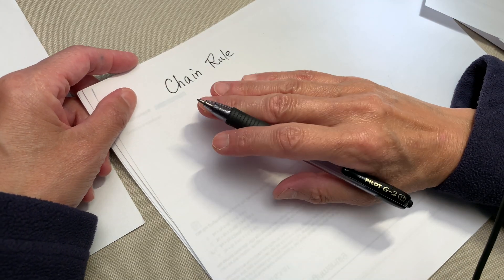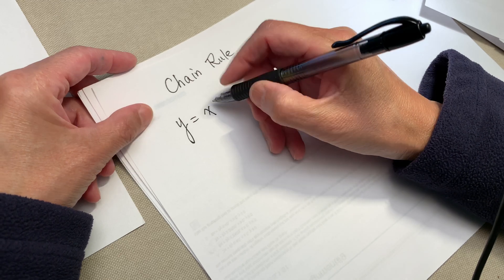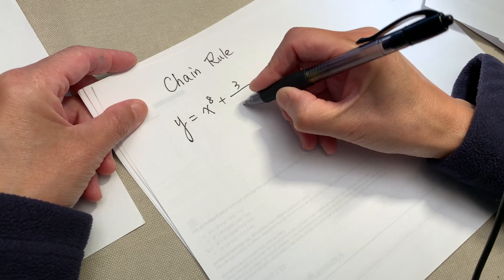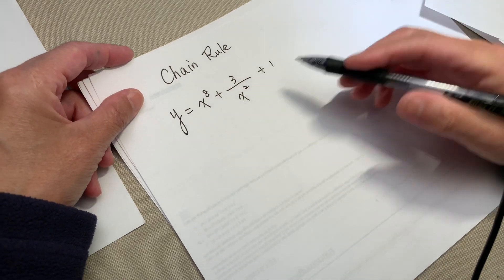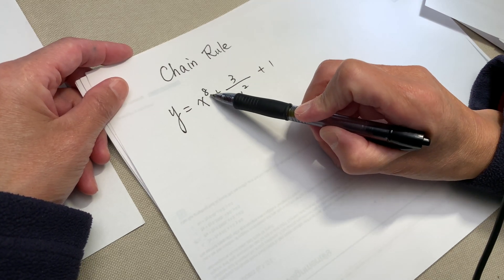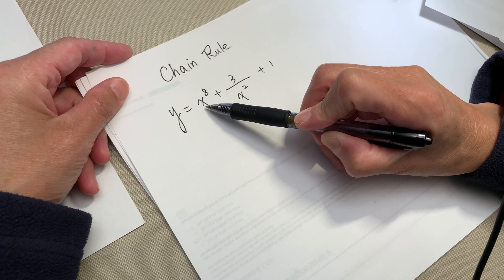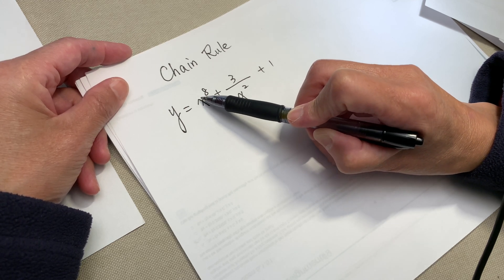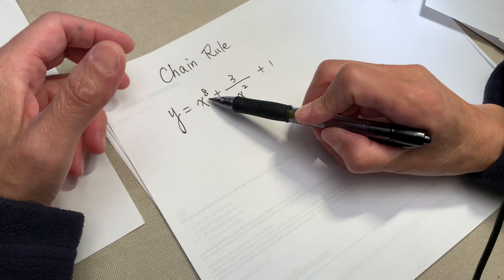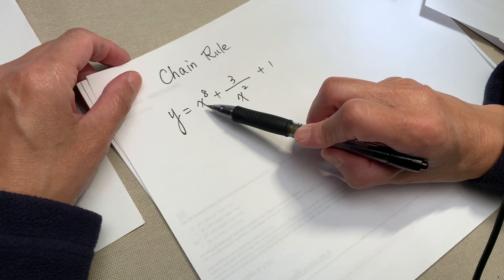When we practice chain rule, first we will see when we need to use chain rule. We have a function y equal to x to the power of 8 plus 3 over x squared plus 1. Do we need to use chain rule? We do not need to use chain rule because this is the power, and under the power the variable is x by itself — the workhorse is x, only one variable, without a complicated plus function. So this is the case where you do not need to use chain rule.